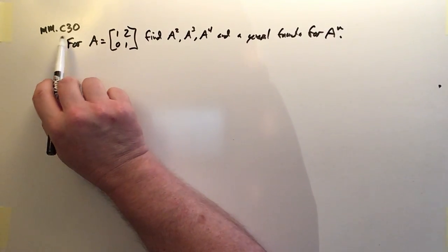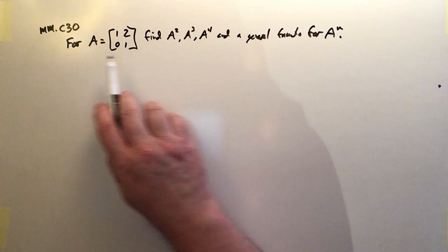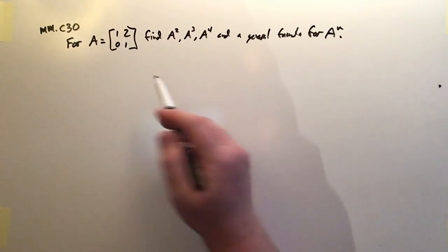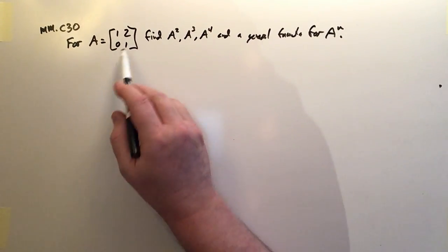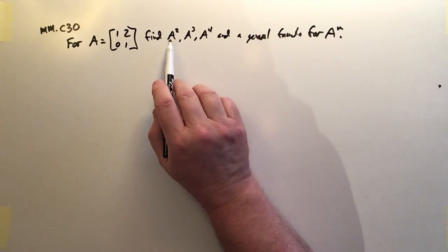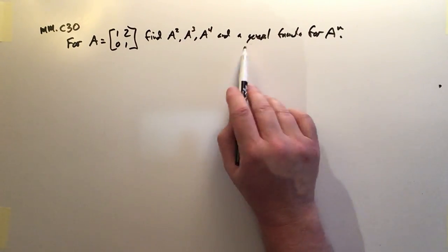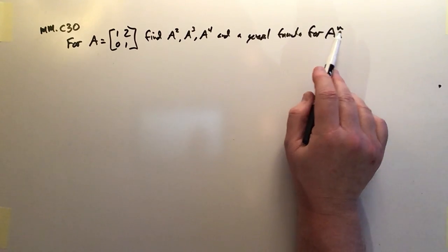Okay, this is matrix multiplication C30, and we're going to look at how exponents apply to matrices. So here's our sample matrix A, and what we want to do is find A squared, A cubed, A to the fourth, and then some general formula for A to the n.